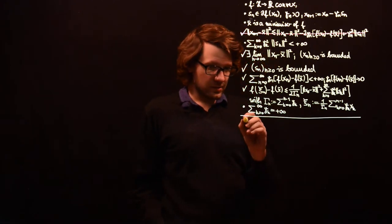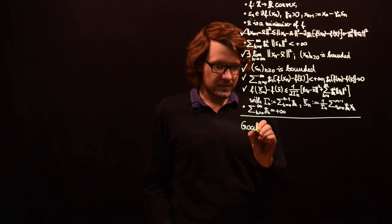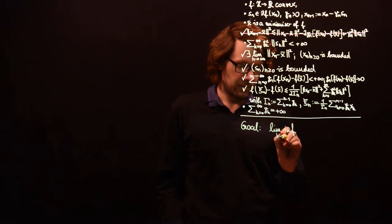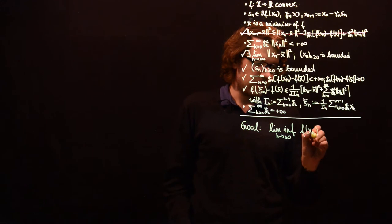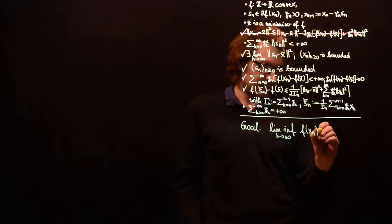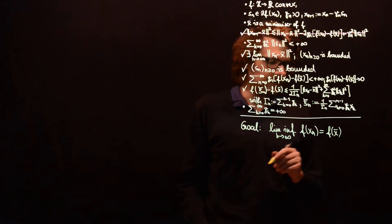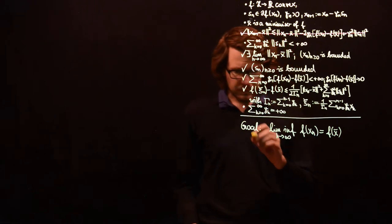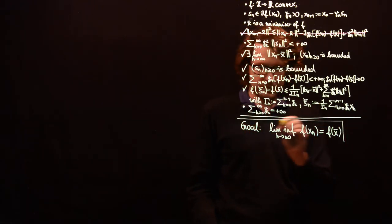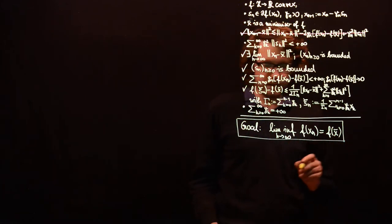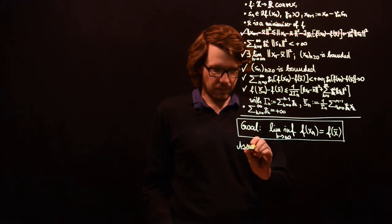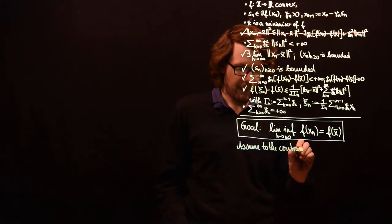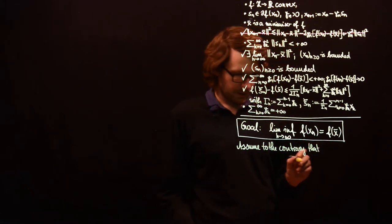This proof also goes in four steps. The first goal is to show that the liminf of f(xn) equals the minimal value of f — so f at the minimizer. In order to prove this goal, we assume to the contrary that it does not hold.